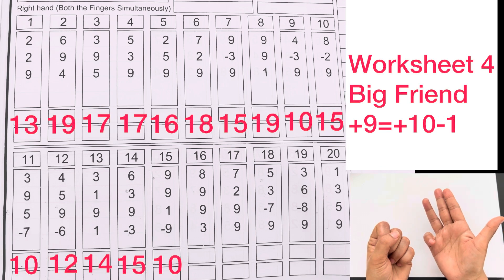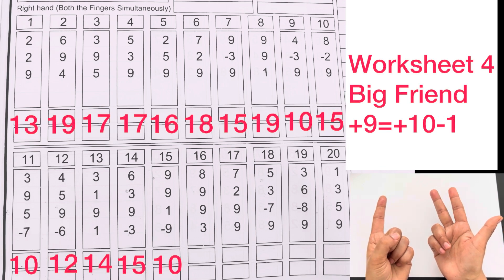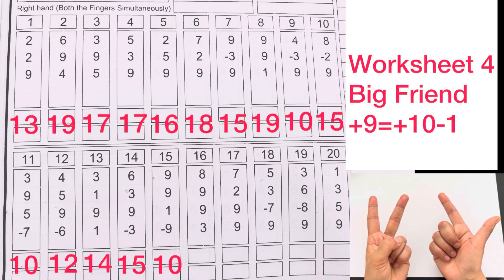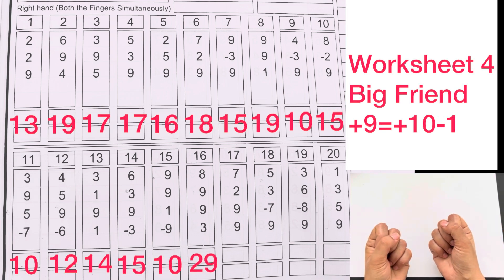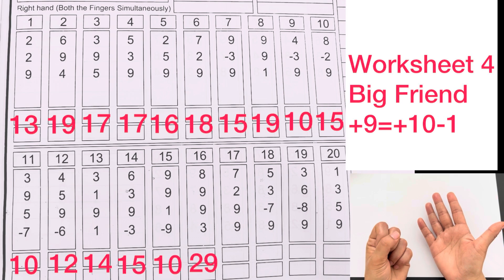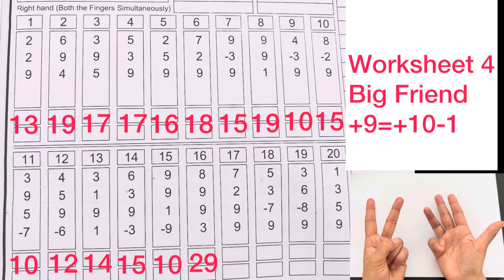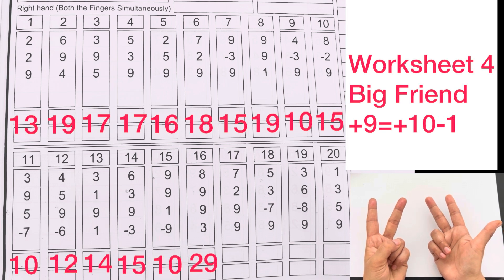7 plus 9 plus 9, plus 10 minus 1, plus 9, plus 10 minus 1, plus 3. Answer is 29. 7 plus 2 plus 9 plus 10 minus 1, plus 9 plus 10 minus 1. Answer is 27.